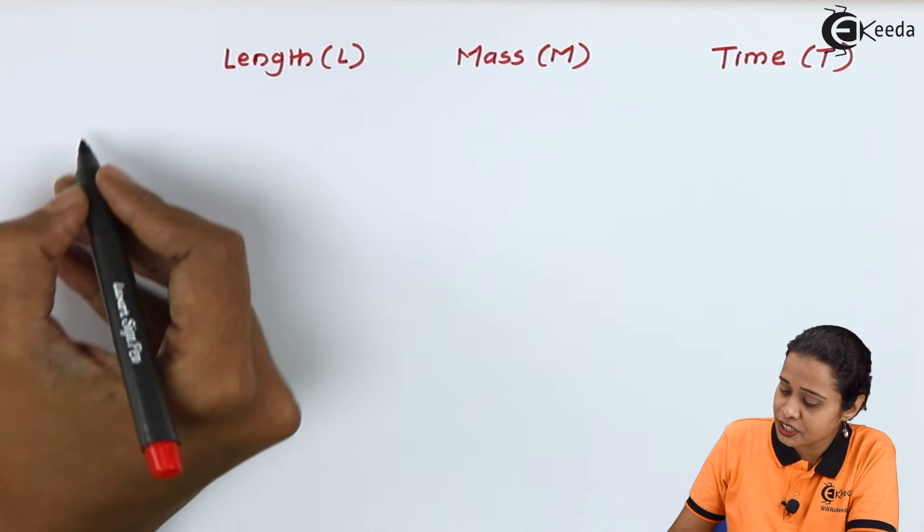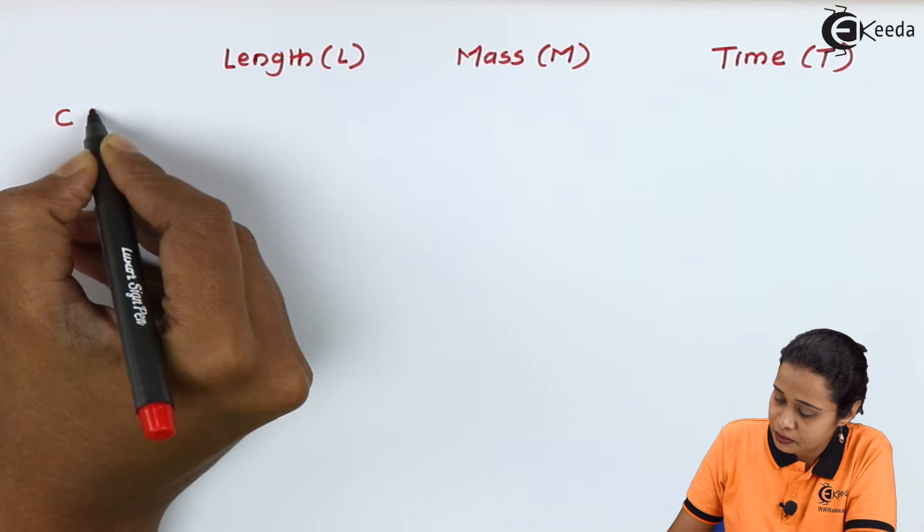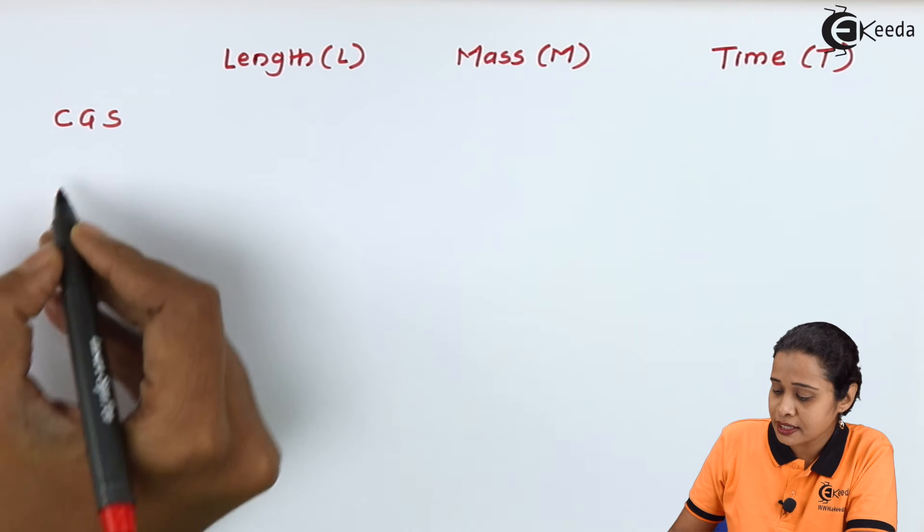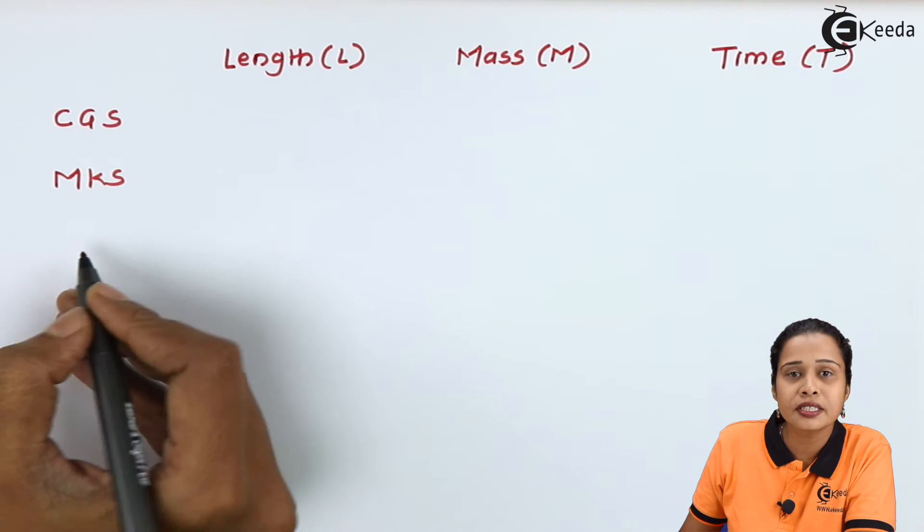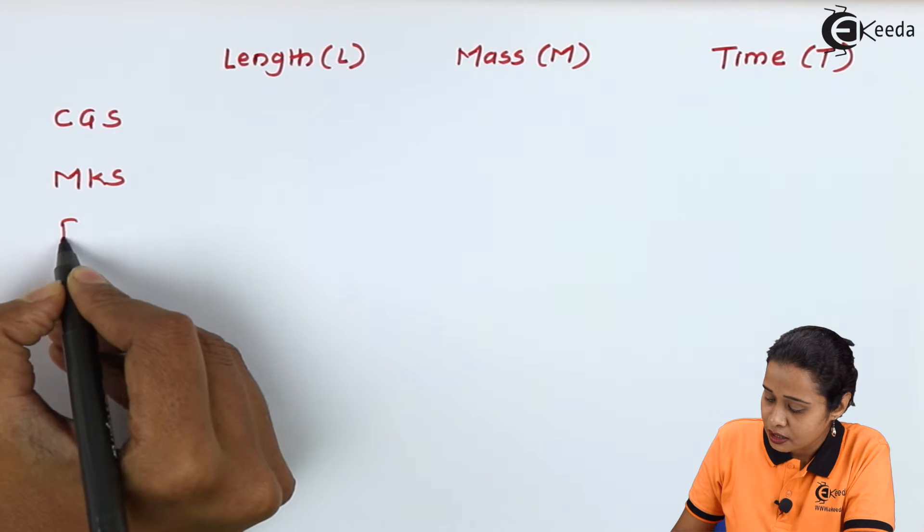First system we have that is CGS. Second system we have MKS. And third system we have that is FPS.